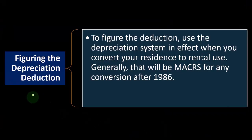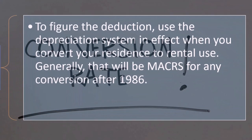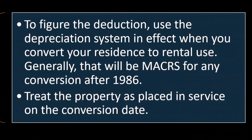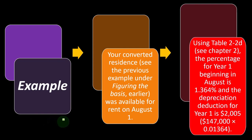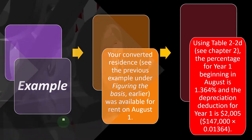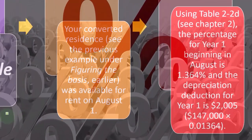Figuring the depreciation deduction: to figure the deduction, use the depreciation system in effect when you convert your residence to rental use. Generally, that will be MACRS for any conversion after 1986. MACRS is going to be our general depreciation method once we put the depreciable property on the books. Usually treat the property as placed in service on the conversion date. Example: your converted residence was available for rent on August 1st. Using Table 2-2D, the percent for year one beginning in August is 1.364%, and the depreciation deduction for year one is $2,005.